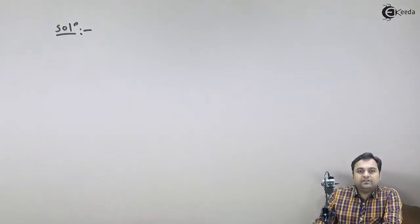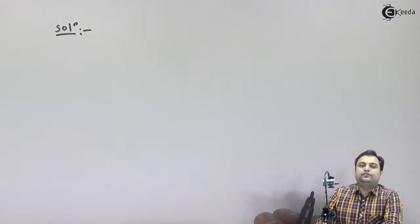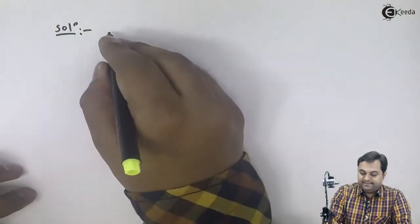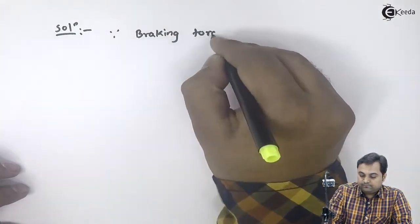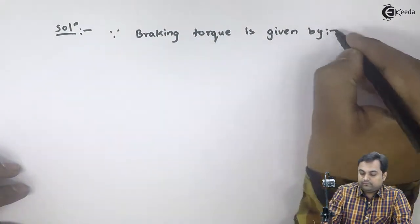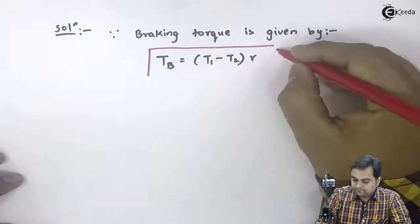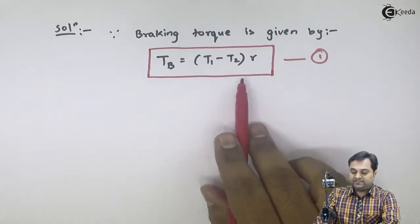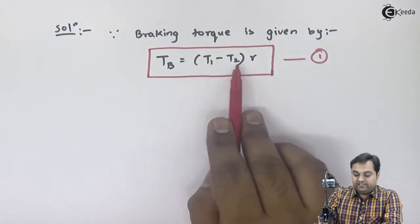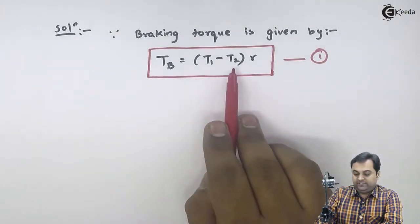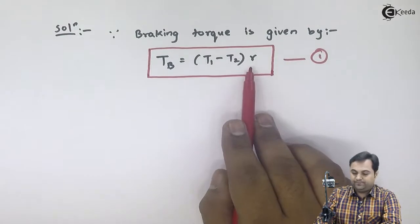Since the braking torque is given, I will start the problem from the braking torque formula — this is equation number one. In the braking torque formula we have T1 and T2, where T1 is the tension in the tight side and T2 is the tension in the slack side, and R is the radius of the brake drum.